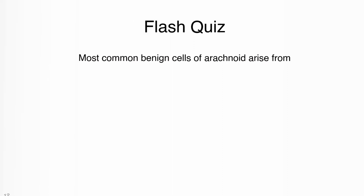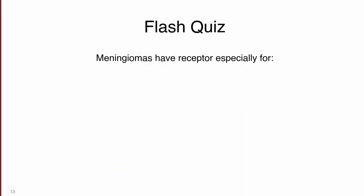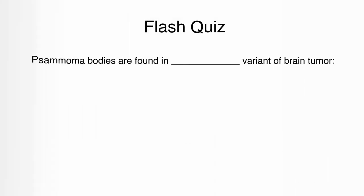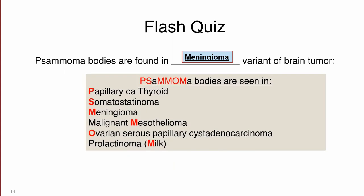Some flash quiz points: The most common benign brain tumor arising from arachnoid cells comes from meningothelial cells. Meningiomas have receptors especially for estrogens, and sometimes for progesterone and androgens. Psammoma bodies are found in the meningioma variant of brain tumors. Other pathologies where Psammoma bodies can be appreciated include papillary carcinoma of the thyroid, somatostatinoma, meningioma, malignant mesothelioma, ovarian serous papillary cystadenocarcinoma, and prolactinoma — remembered by the mnemonic PSAMMOMA.